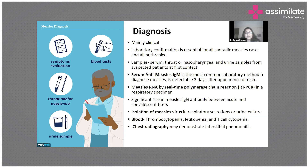So what are the tests that are done? One is the serum anti-measles antibody — IgM — that is the most common test done. This is a blood test and is usually detectable after three days of the appearance of the rash. The other test is measles RNA, which can be done by RT-PCR, usually run on a respiratory specimen, but can also be done on a urinary specimen. There is also sometimes a significant increase in IgG titers between the acute and convalescent phases.